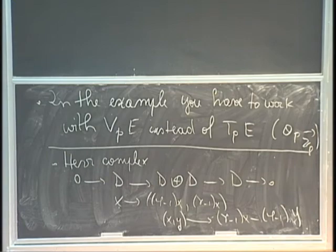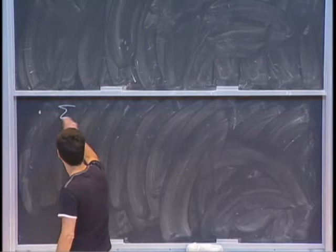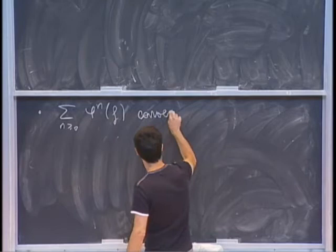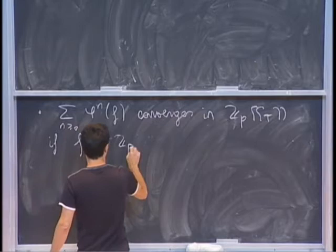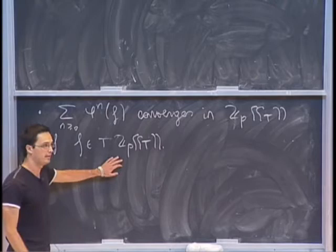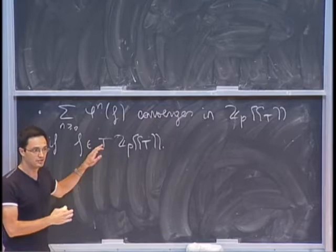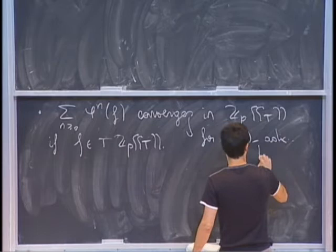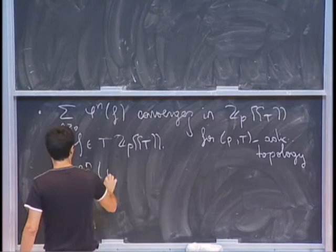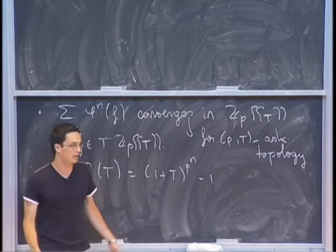The third one was about the convergence of a certain series. We had something like the sum of phi to the N of F, which converges in Z_P[[T]]. I probably said that this is convergent for the P-adic or T-adic topology. This is wrong. This is convergent for the natural topology of this ring, which is the P-and-T-adic topology. The problem being that phi to the N of T is (1+T)^{p^N} - 1, and this is not convergent for either the P-adic or T-adic topology, but it is convergent for the P-and-T-adic topology.